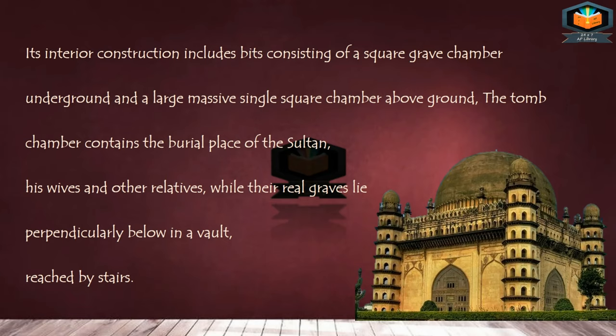The interior construction consists of a square grave chamber underground and a large single square chamber above ground. The tomb chamber contains the burial place of the sultan, his wives, and other relatives, while their real graves lie perpendicularly below in a vault reached by stairs.